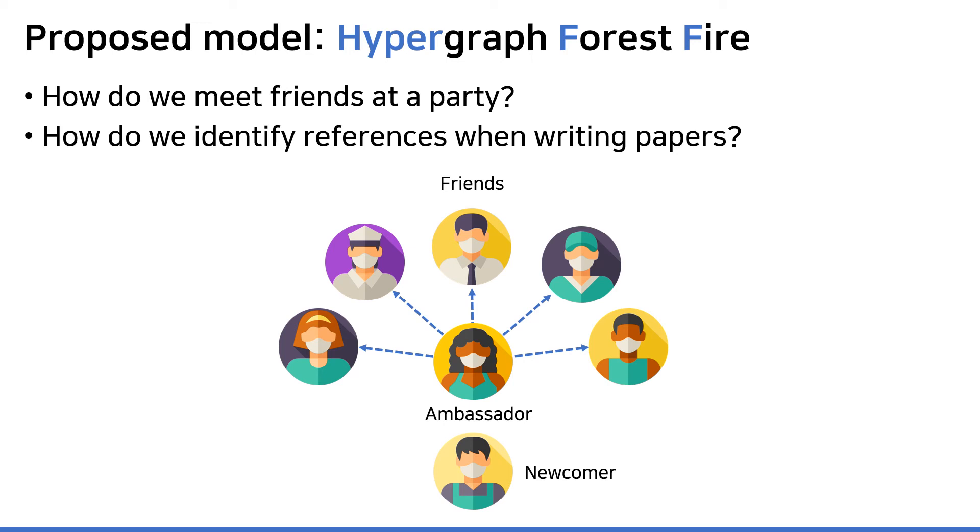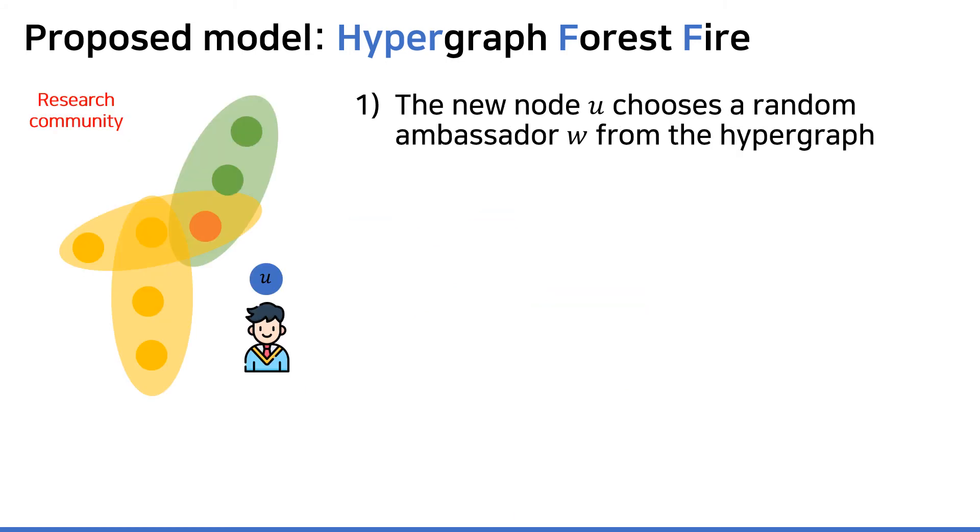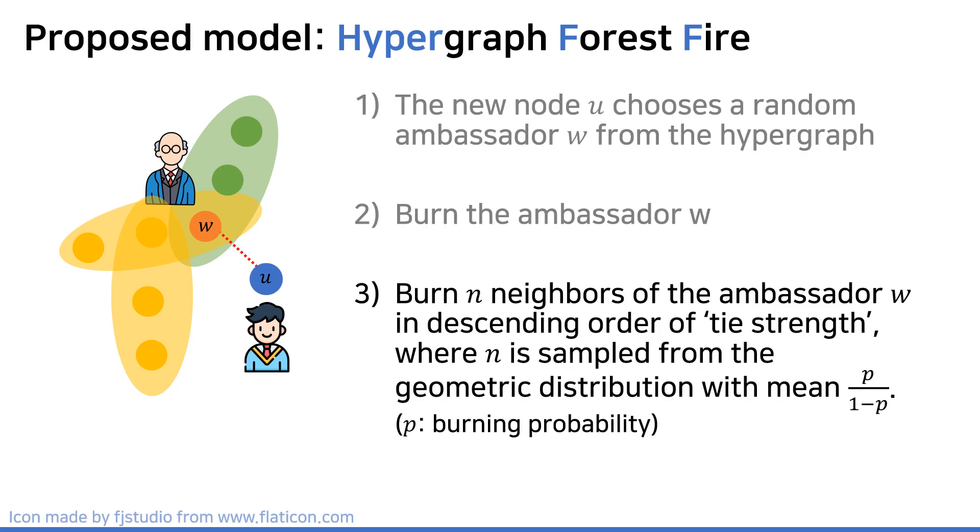Let me describe our model through an example of co-authorship network. Suppose a new graduate student who is node U in this figure joins the research community. The student chooses his advisor who is node W, and making this new relationship is said to be burning the node W. As of now, the student would like to work together with the advisor's peers. When introducing peers, the advisor W is more likely to introduce intimate peers rather than just random peers, so it's reasonable to take into account sort of tie strengths between those in doing so. Introducing someone new based on the advisor is similar to the phenomenon that the fire based on the advisor spread through his network, and that's why this procedure is called forest fire.